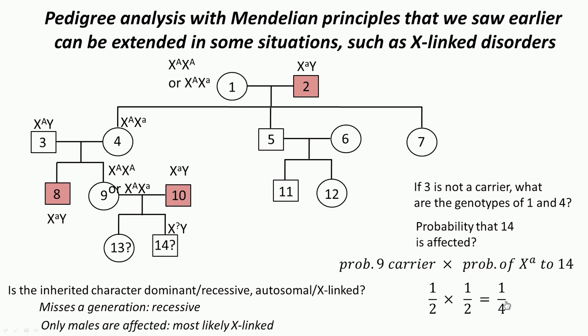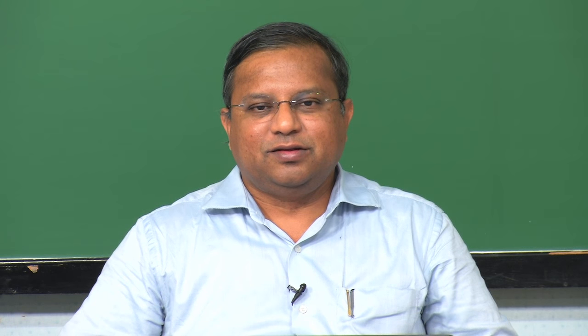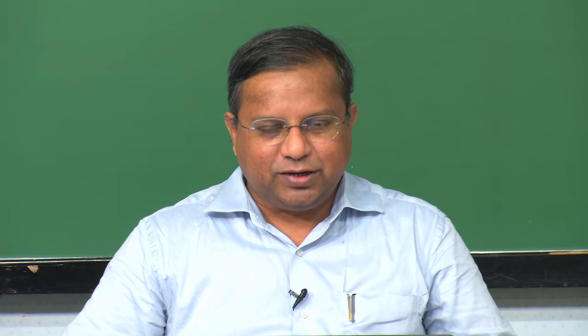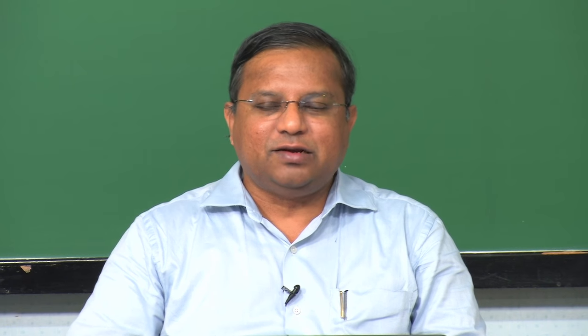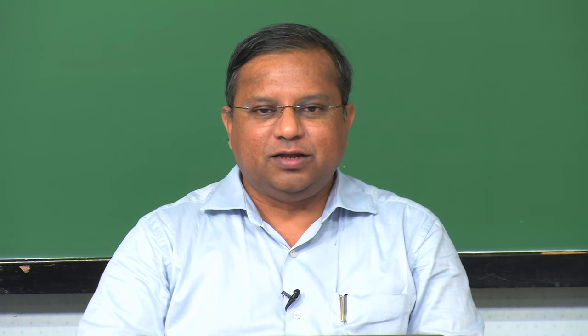So that is the answer to the question — the probability is one fourth. Let us finish up with what we said earlier. The Mendelian principles have limitations; we cannot apply them blindly to everything. But we can apply them to a large number of diseases that show Mendelian inheritance. There are also many non-Mendelian inheritances.